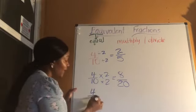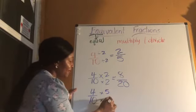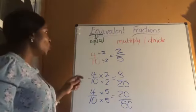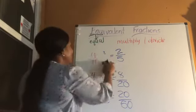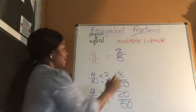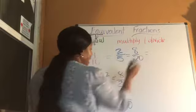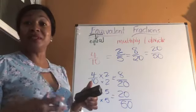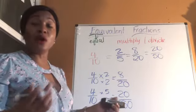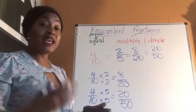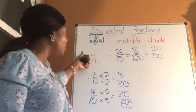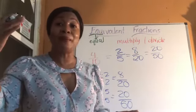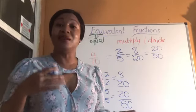We can go further and multiply again. Let's try five: five times four is twenty, and ten times five is fifty. So four-tenths equals two-fifths, which equals eight-twentieths, which also equals twenty-fiftieths. Remember, if you can find a number that can equally divide into both the numerator and the denominator, then you can divide. If not, you have to multiply. And remember, whatever you multiply by at the top, you have to multiply by it at the bottom as well.